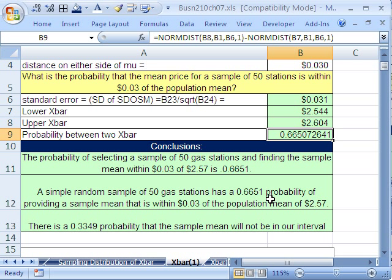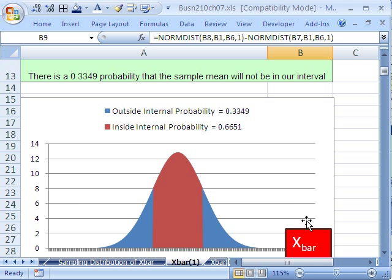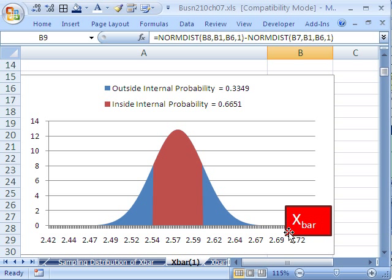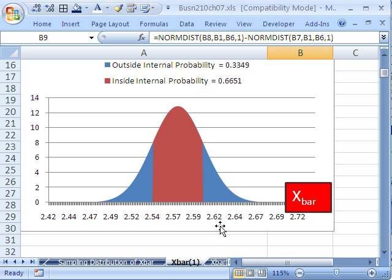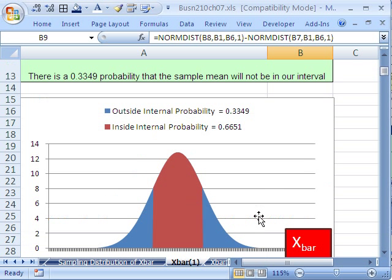This tells you the probability of being within that interval. But what if we get outside that interval? There's a 0.3349 probability that sample mean will not be in our interval. Now, here's a picture. The picture says 1,000 words. There's the x bars. That's probably about 3 standard deviations. A very small range compared to what we get with population data, right? So this is the probability that we get a mean within 3 cents. Here's the probability of not getting a mean.